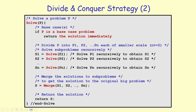Otherwise, we divide this problem into subproblems P1, P2, ..., Pn, each of smaller scale. Each subproblem has to have the same type as the original problem P but with smaller scale. That means if our black-box function 'solve' solves the bigger problem P, it definitely solves a smaller problem of the same type. So we can call 'solve' to get solutions S1 for P1, S2 for P2, and so on.